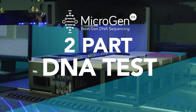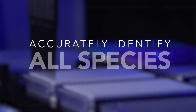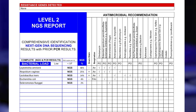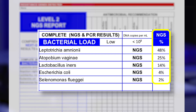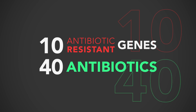Microgen Diagnostics report tells you all of those things. Our two-part DNA test identifies all bacteria, all aerobes and anaerobes, and all fungal species in every sample — all microbes, one test. Our test also tells you the percentage each species is of the sample, so you can target the dominant microbes in the infection. And our test identifies 10 common antibiotic resistance genes, which will affect the result of 40 different kinds of antibiotics.